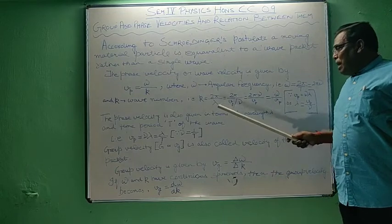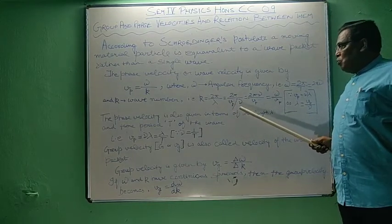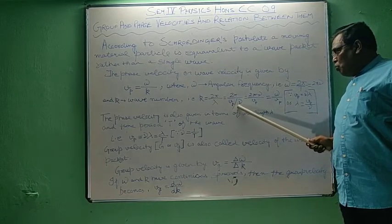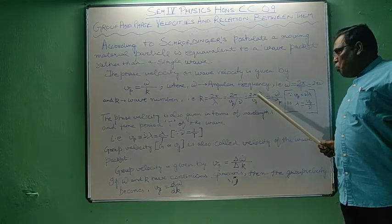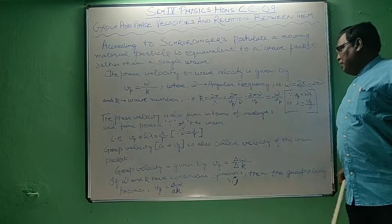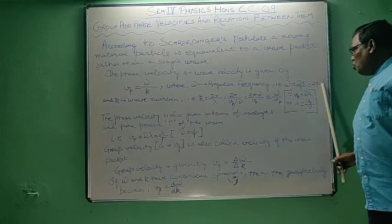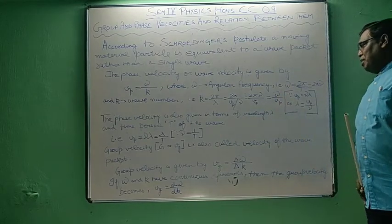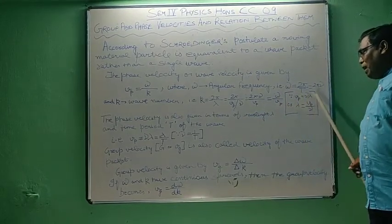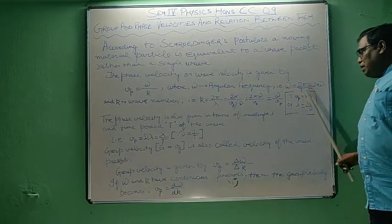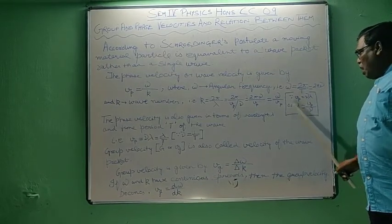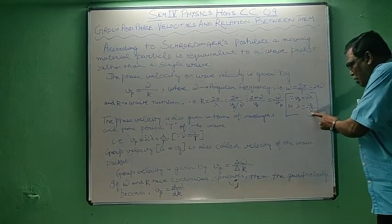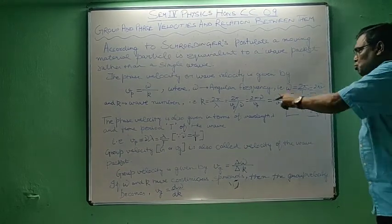Lambda equals vp divided by nu. So k = 2π·nu / vp. Since 2π·nu is omega, this becomes omega divided by vp. This follows from the relation vp = nu·lambda, which is true for any type of wave. From this, lambda = vp / nu, and this is used here.